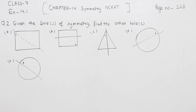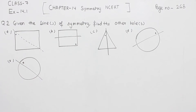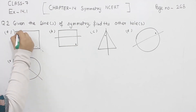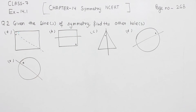Starting with part 1. In part 1, this is the figure we are having. One of the holes is here. Now this is the line of symmetry, so the other hole will be on this side.